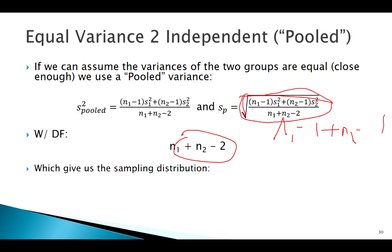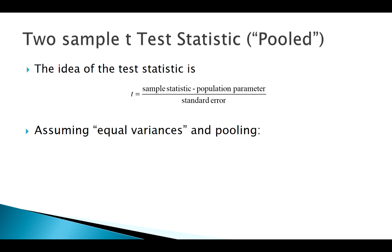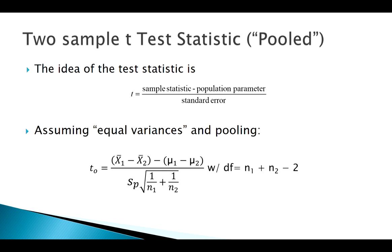Our sampling distribution with a pooled t-test is going to be a little different, so the test statistic is set up differently for a pooled t-test, and the confidence interval is set up a little differently as well for a pooled two-sample t-test — assuming equal variances and pooling.